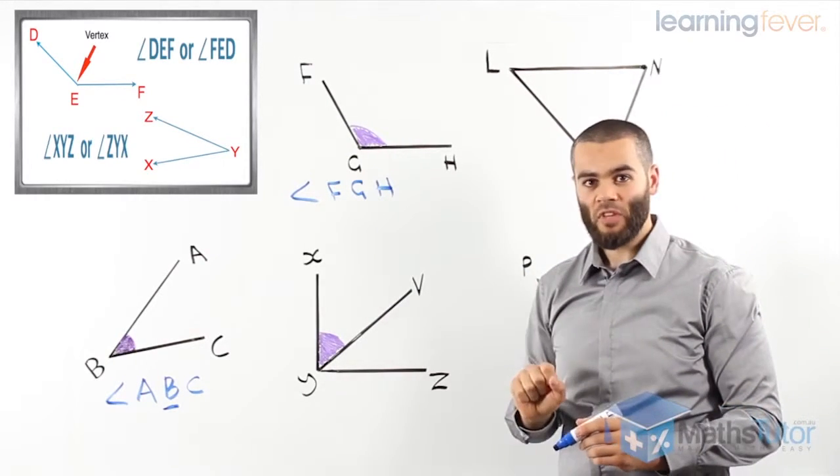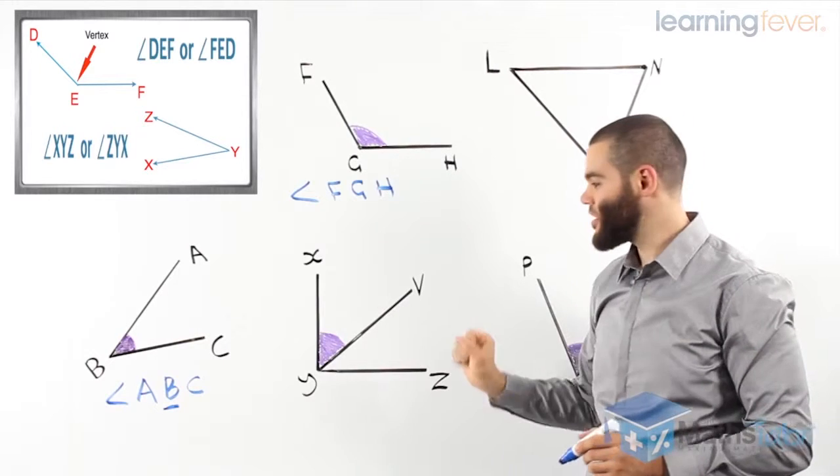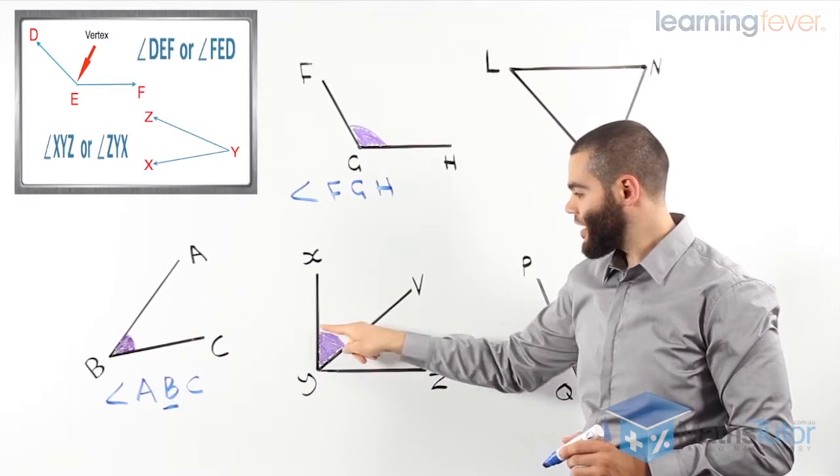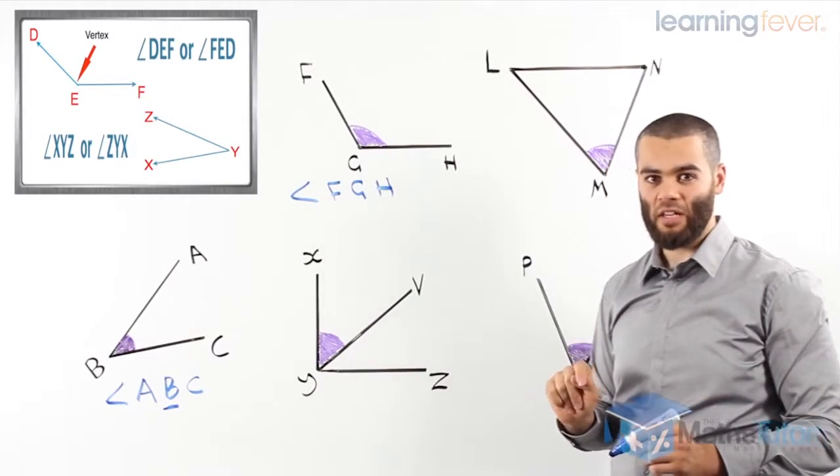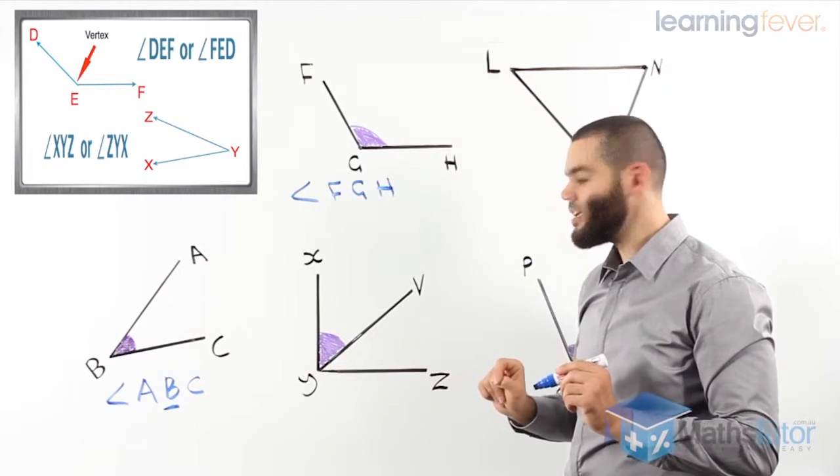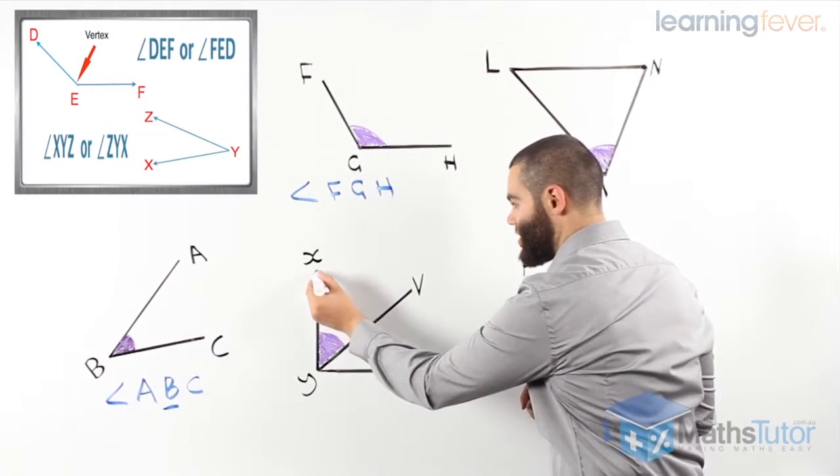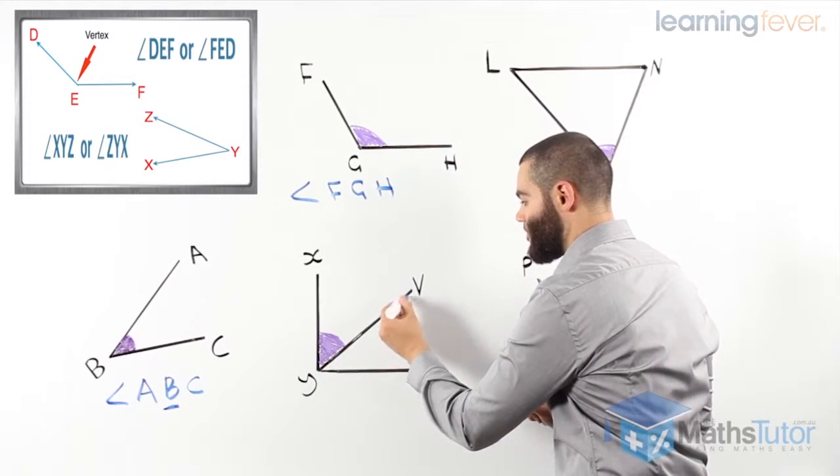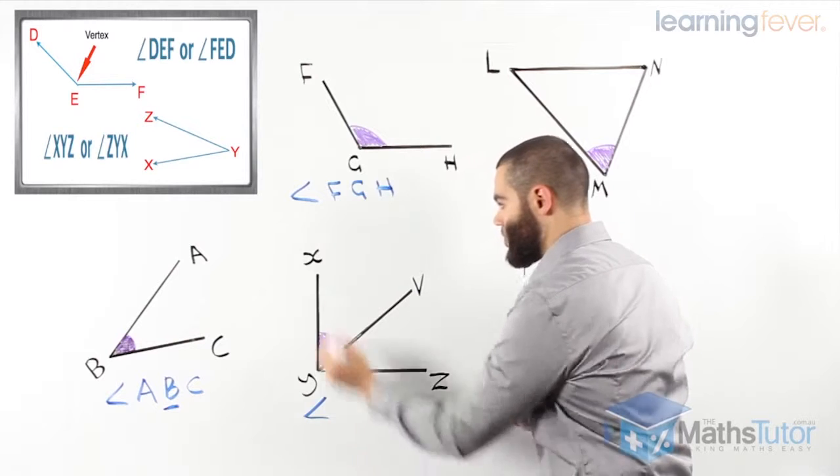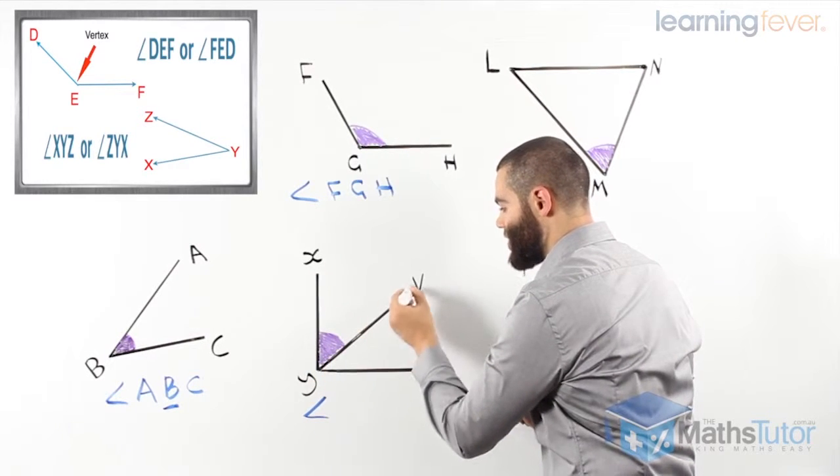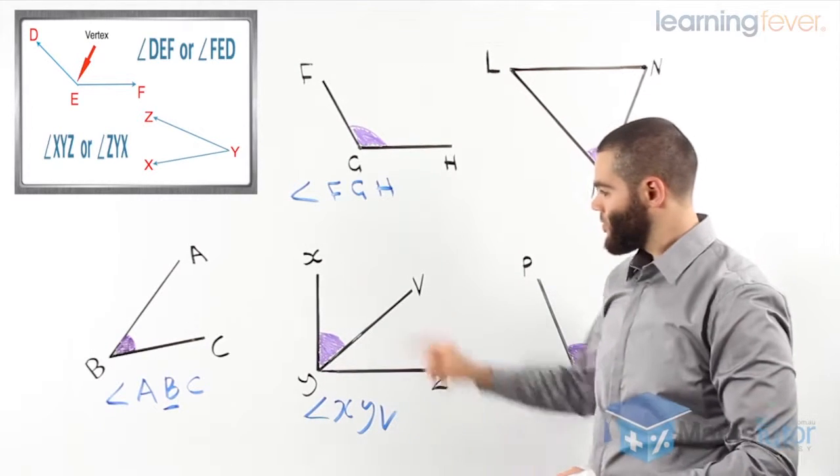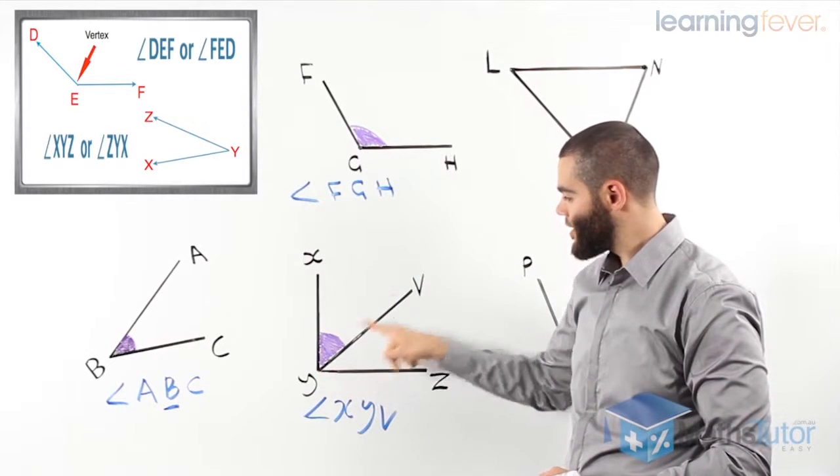Look at this one here, where we have two angles. They are adjacent, they are next to each other. But the one that's marked in purple is this angle here. So, we want to name this angle. We locate, and we see the Y is in the vertex. We only want this section there. So, angle XYV.